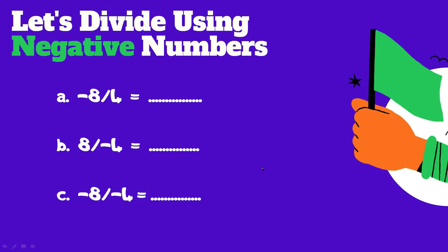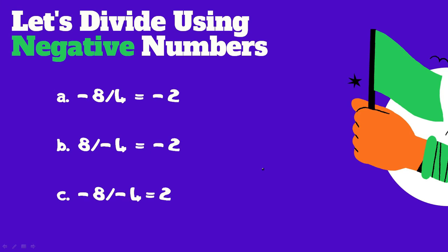Let's divide using negative numbers. Remember: if you divide a positive by a negative number, you'll get a negative number. If you divide a negative number by a positive number, you get a negative number. If you divide a negative number by a negative number, you get a positive number. Negative eight divided by four is negative two. Eight divided by negative four is negative two. Negative eight divided by negative four is positive two.